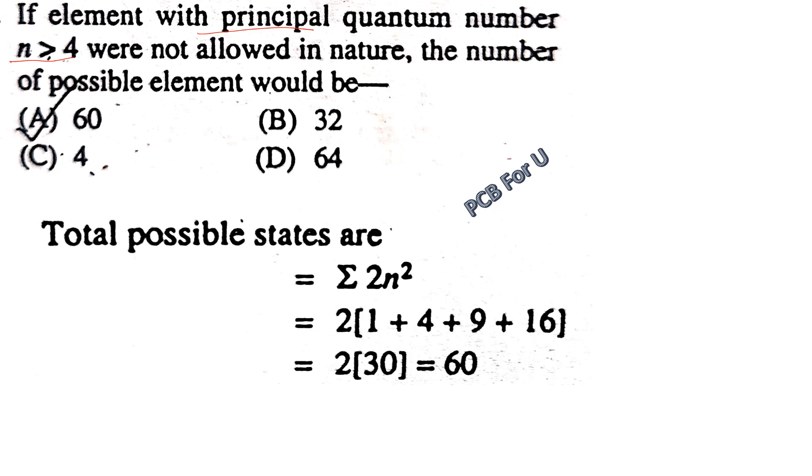Total possible states are equal to the summation of 2n². Since n is greater than 4, we calculate 2 times 2n².